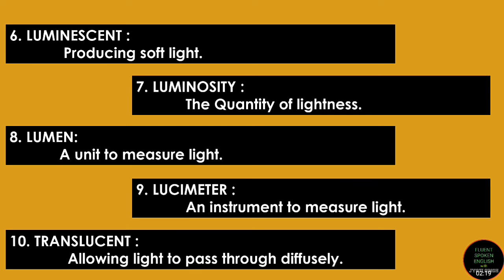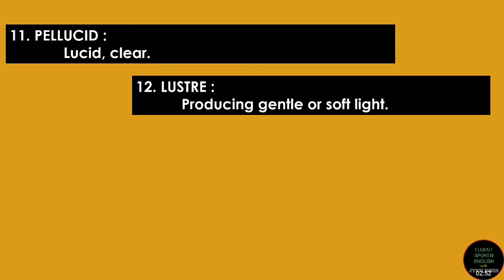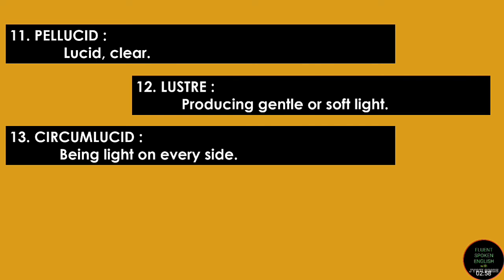'Pelucid' — a few days back we had learned about this word in our vocabulary section. Pelucid means something which is very clear. 'Lucid' and 'luster' — luster also means something which produces gentle or soft light. 'Circumlucid' — 'circum' means everywhere, so circumlucid means being lit on every side, to be bright from each and every side.